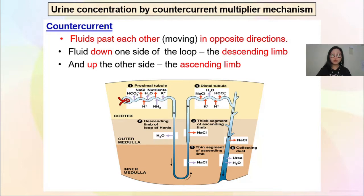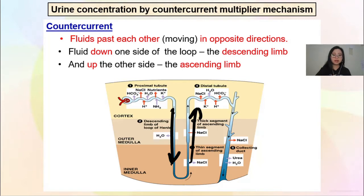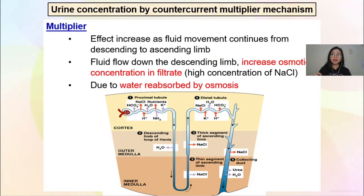Counter current — dia arus yang bertentangan — so the fluids will pass each other and they move in opposite directions. The first one is when fluid flows down the descending limb, and the second one is when fluid flows up the ascending limb. Inilah dia punya counter current. Dalam buku biasanya tidak tunjuk ni, tapi ada satu lagi current semasa dia turun collecting duct. Next keyword: multiplier.